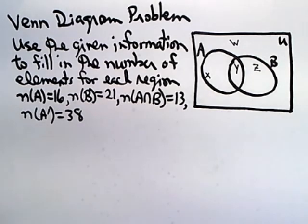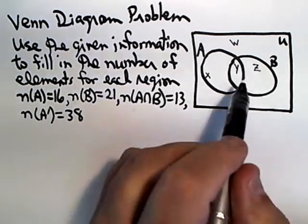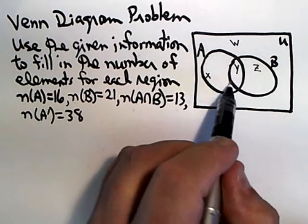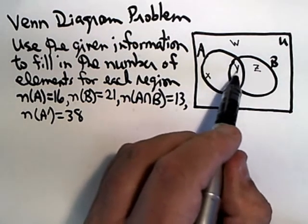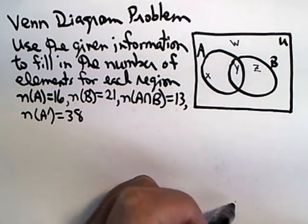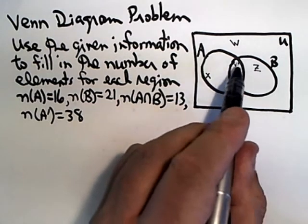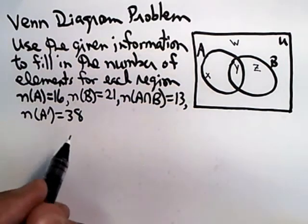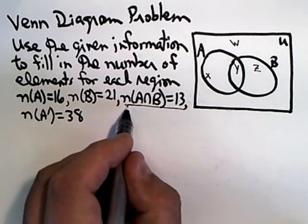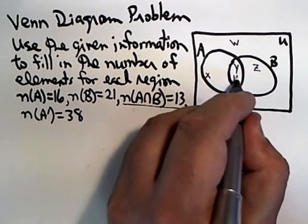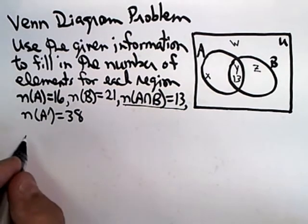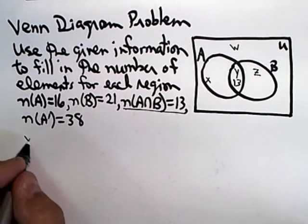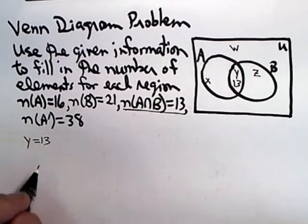As we've discussed before, if you possibly can, you want to start in the innermost region of the Venn diagram. That would be this region where A and B overlap, which they've labeled Y. That is the intersection of A and B, as we've dealt with many times. They told us that the intersection of A and B has 13 elements in it, so Y equals 13.